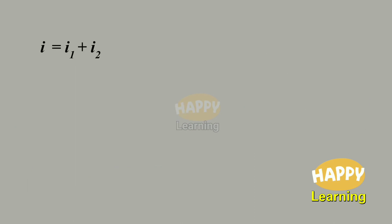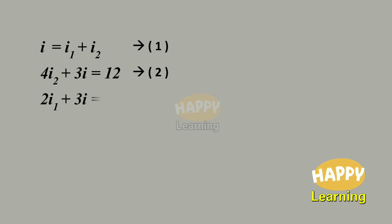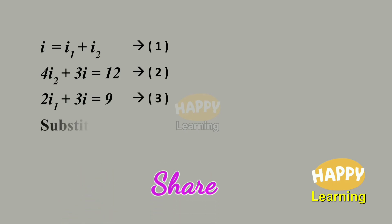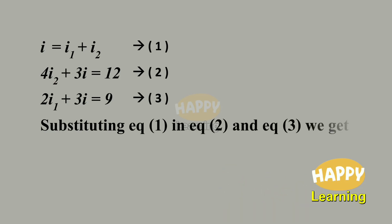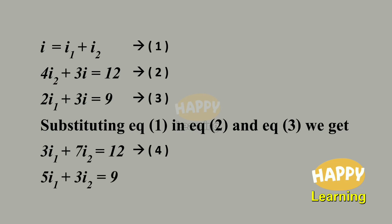We now have 3 equations: equation 1 — I equals I1 plus I2; equation 2 — 4I2 plus 3I equals 12; equation 3 — 2I1 plus 3I equals 9. Substituting equation 1 into equations 2 and 3, we get equation 4: 3I1 plus 7I2 equals 12, and equation 5: 5I1 plus 3I2 equals 9.